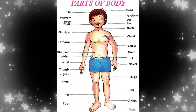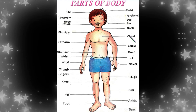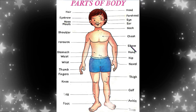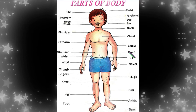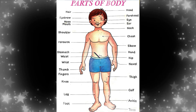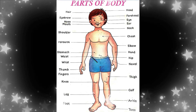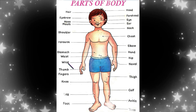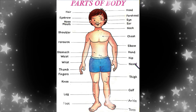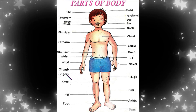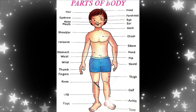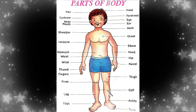Shoulders, this is chest, forearm, elbow, this is hand, your hips. Stomach, wrist, thumb, navel, fingers, thigh, knee, this is your calf.